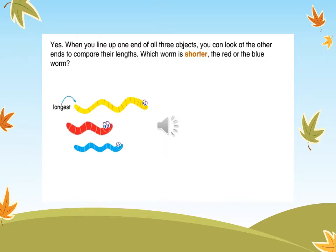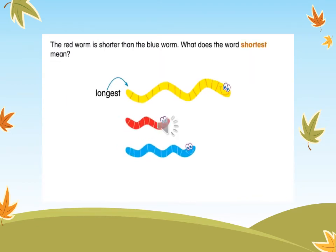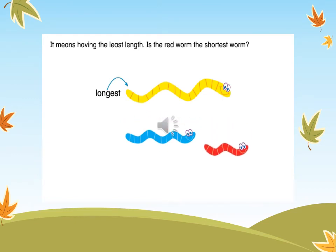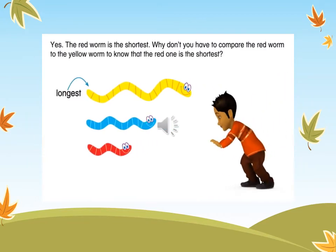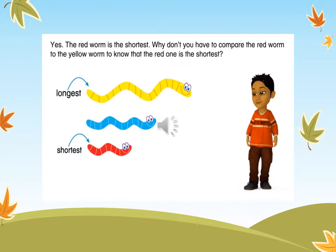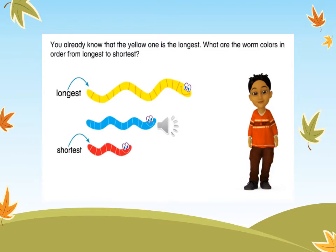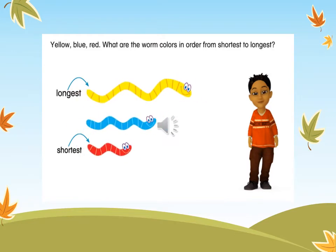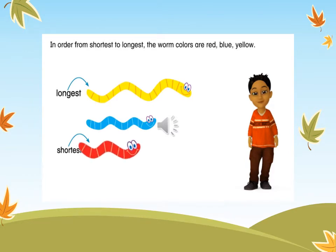Which worm is shorter, the red or blue worm? The red worm is shorter than the blue worm. What does shortest mean? It means having the least length. Is the red worm the shortest worm? Yes, the red worm is the shortest. You already know the yellow one is the longest, so you don't need to compare the red worm to it. The worm colors in order from longest to shortest are yellow, blue, red. From shortest to longest: red, blue, yellow.